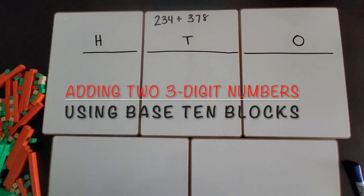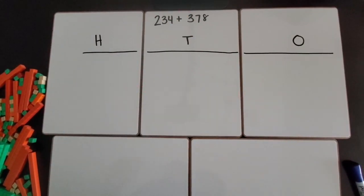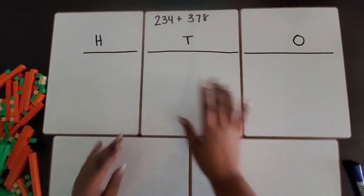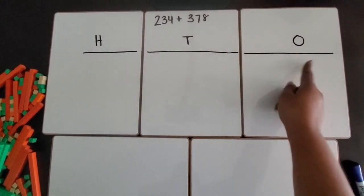We are going to add two three digit numbers using base 10 blocks. The boards are broken up based on hundreds, tens, and ones.